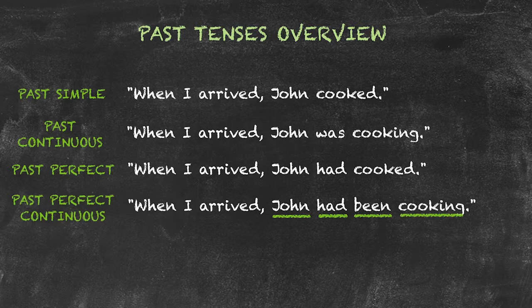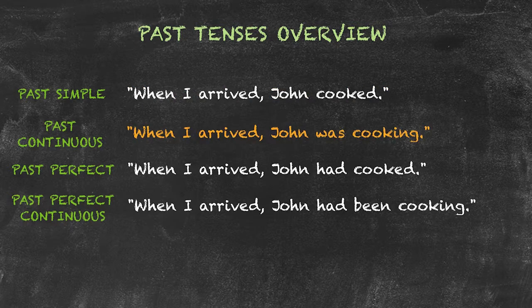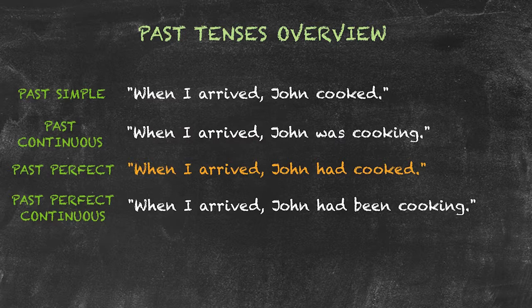So let's have a look at the four sentences together again. When I arrived, John cooked — I arrived first, then John cooked. When I arrived, John was cooking — the cooking was actually in progress at the time I arrived. When I arrived, John had cooked — the cooking had finished before I arrived.